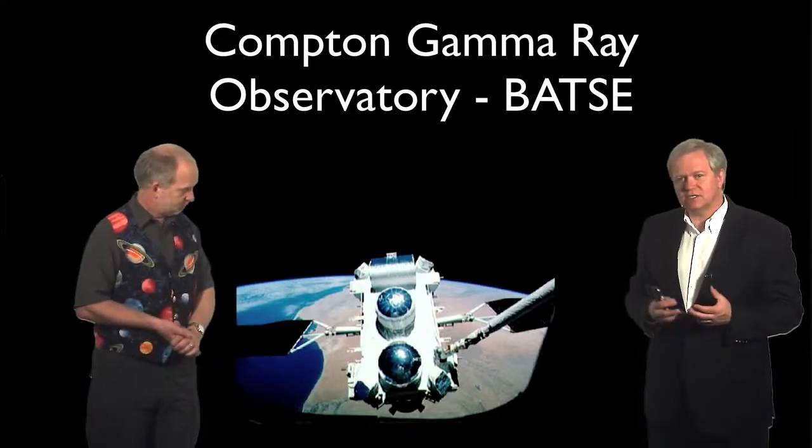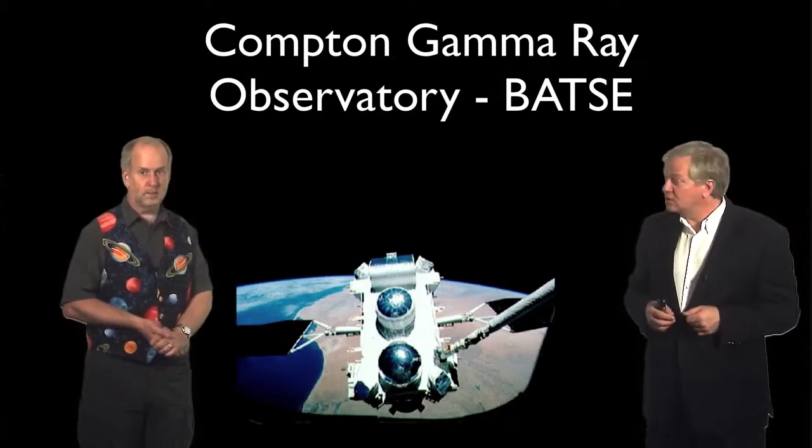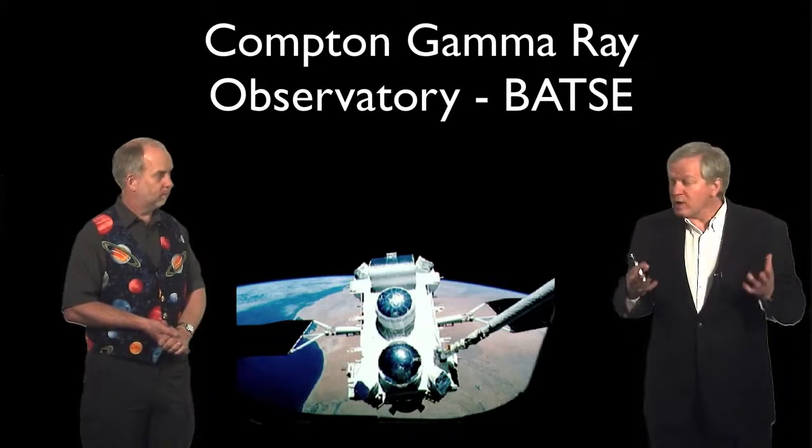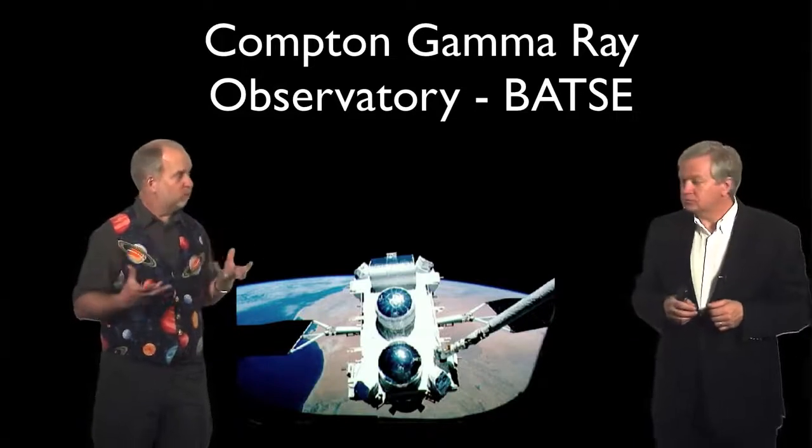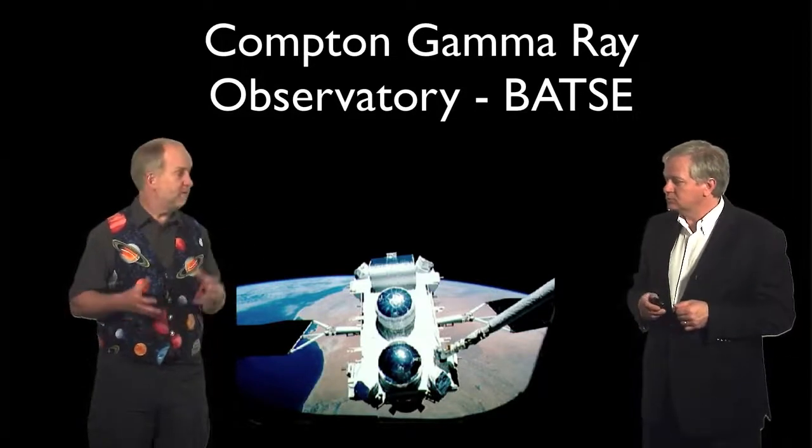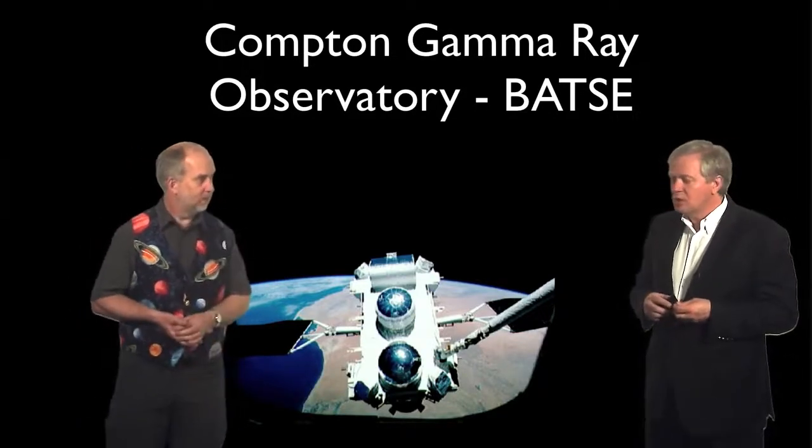So they had amazing sensitivity, so much so that they could detect a gamma-ray burst a day, rather than a couple a year. That's because they could pick up the faint ones, ones that emitted fewer gamma rays, which the previous satellites had been unable to see.